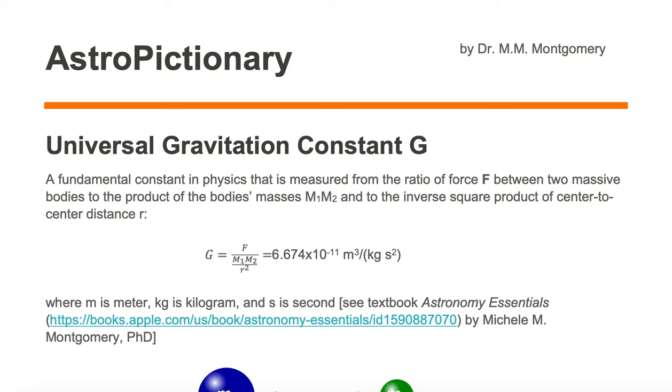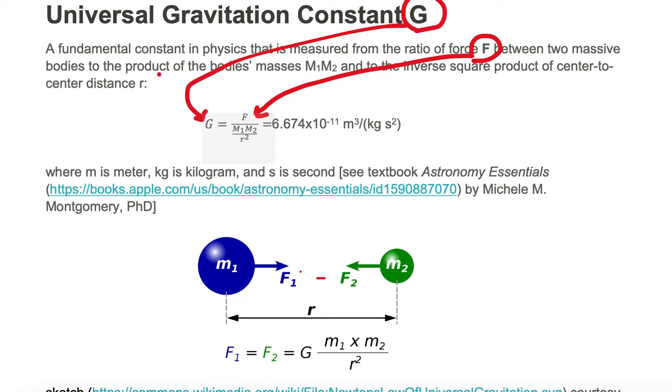Universal gravitational constant G is a fundamental constant in physics that is measured from the ratio of force F between two massive bodies m1 and m2 to the product of the body's masses m1 times m2 and to the inverse square product of the center-to-center distance r.